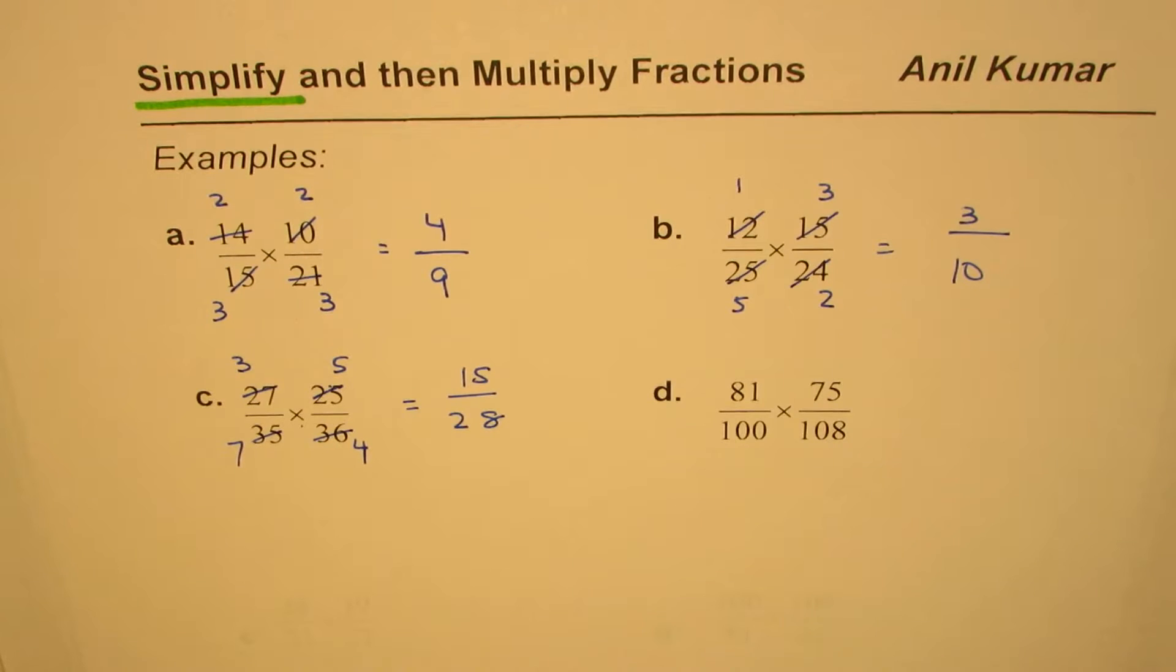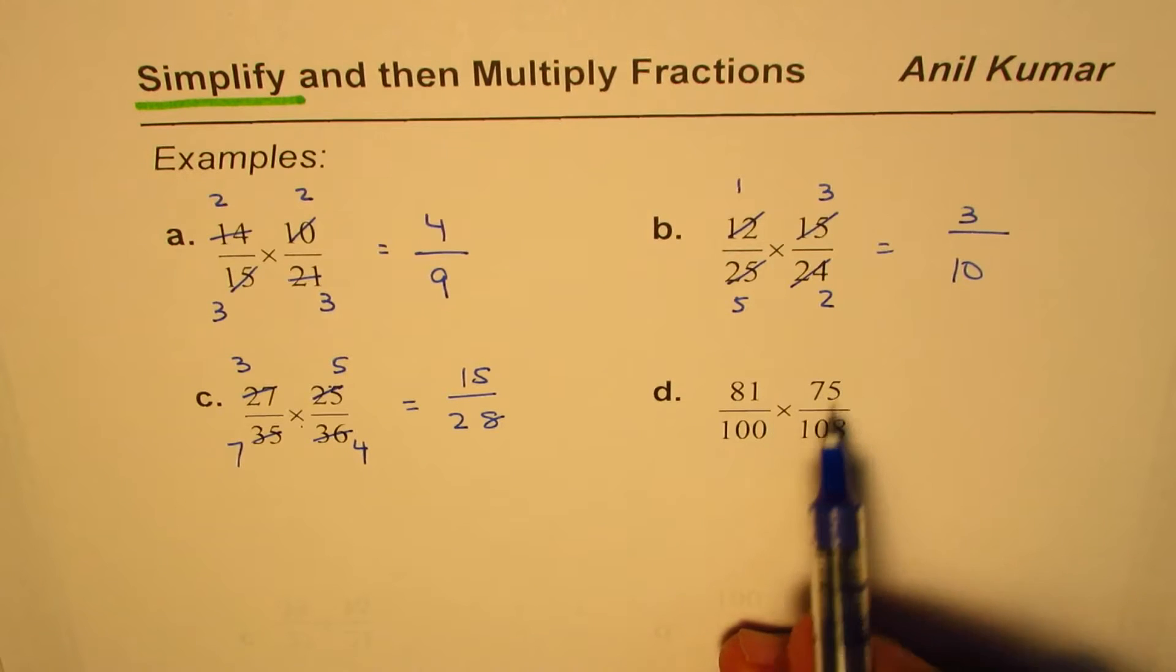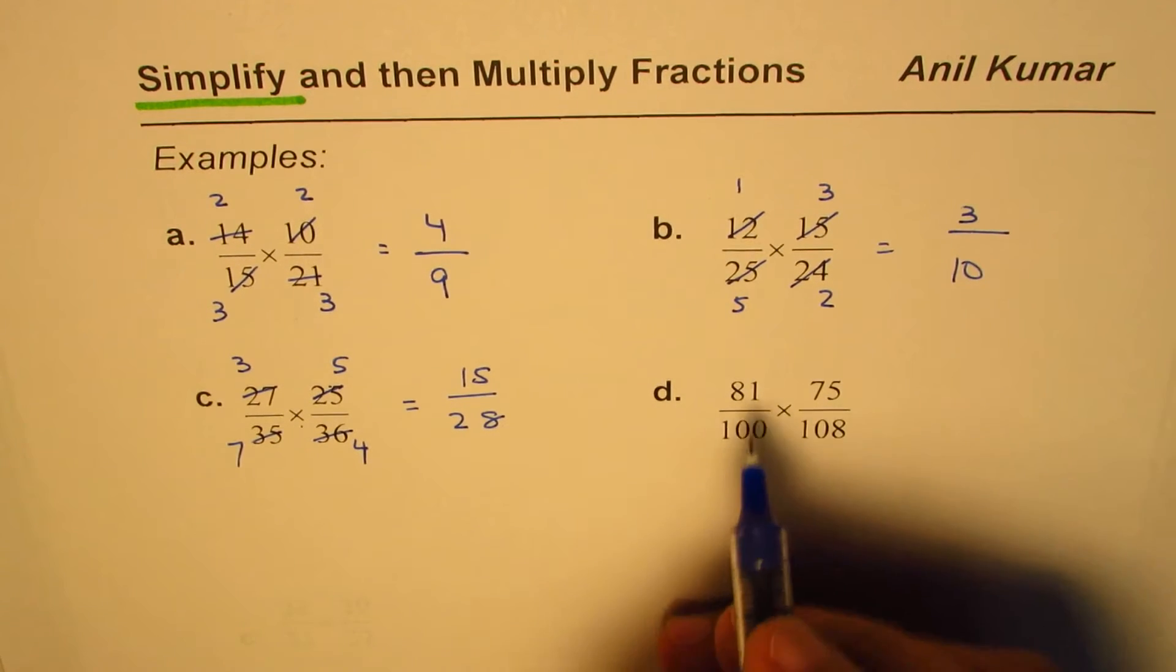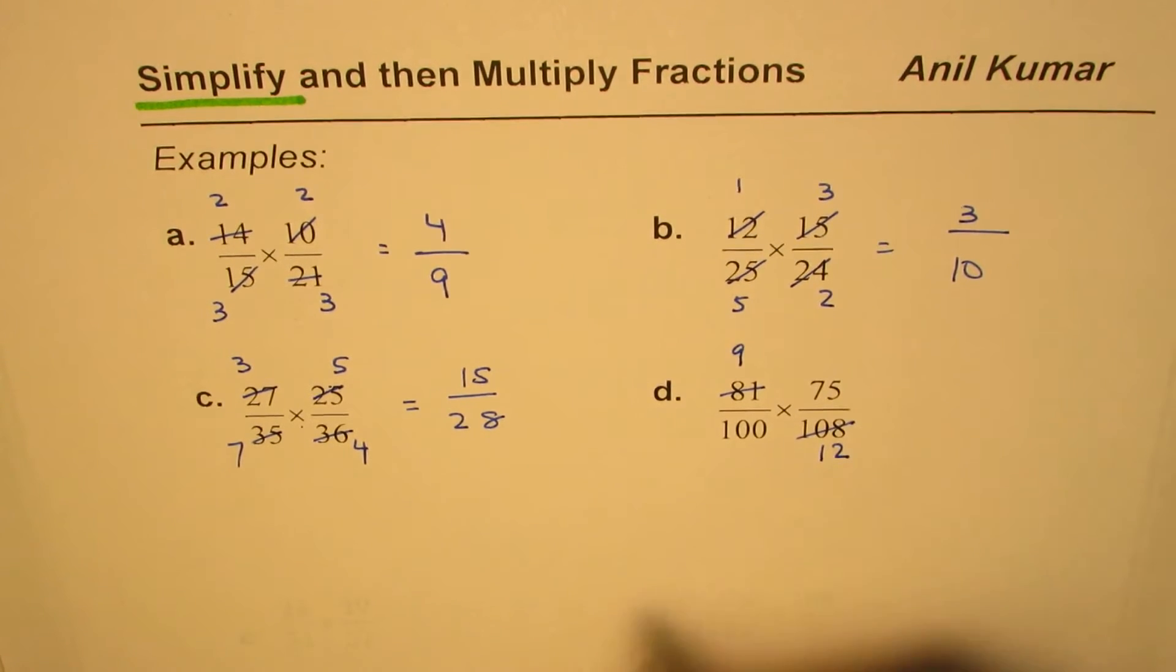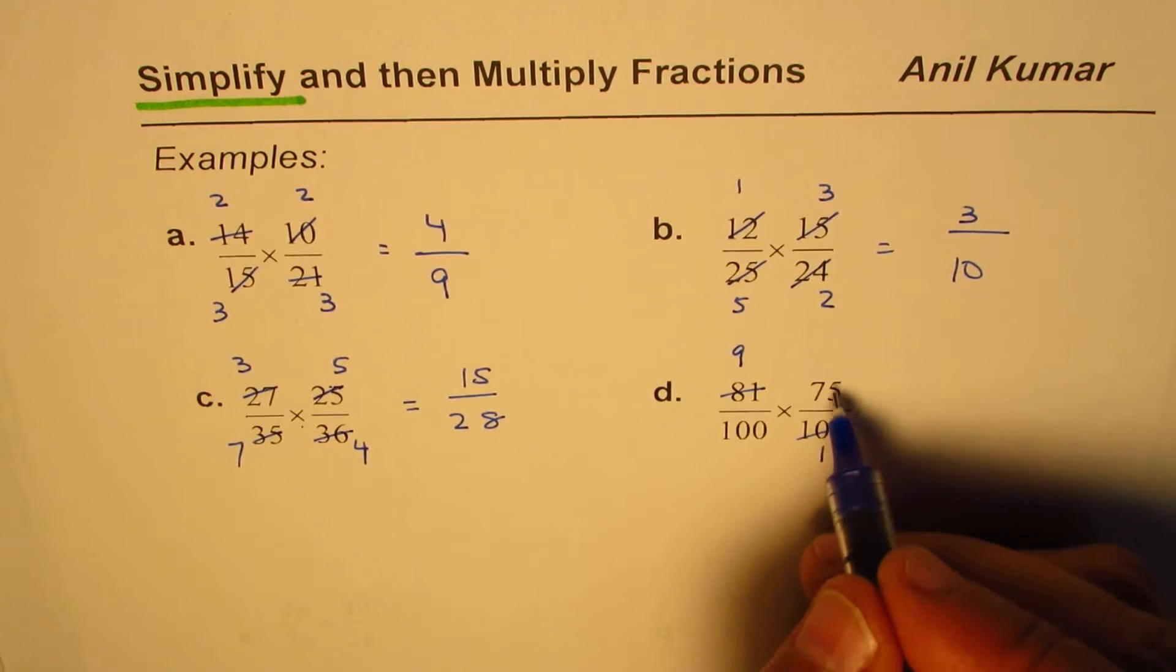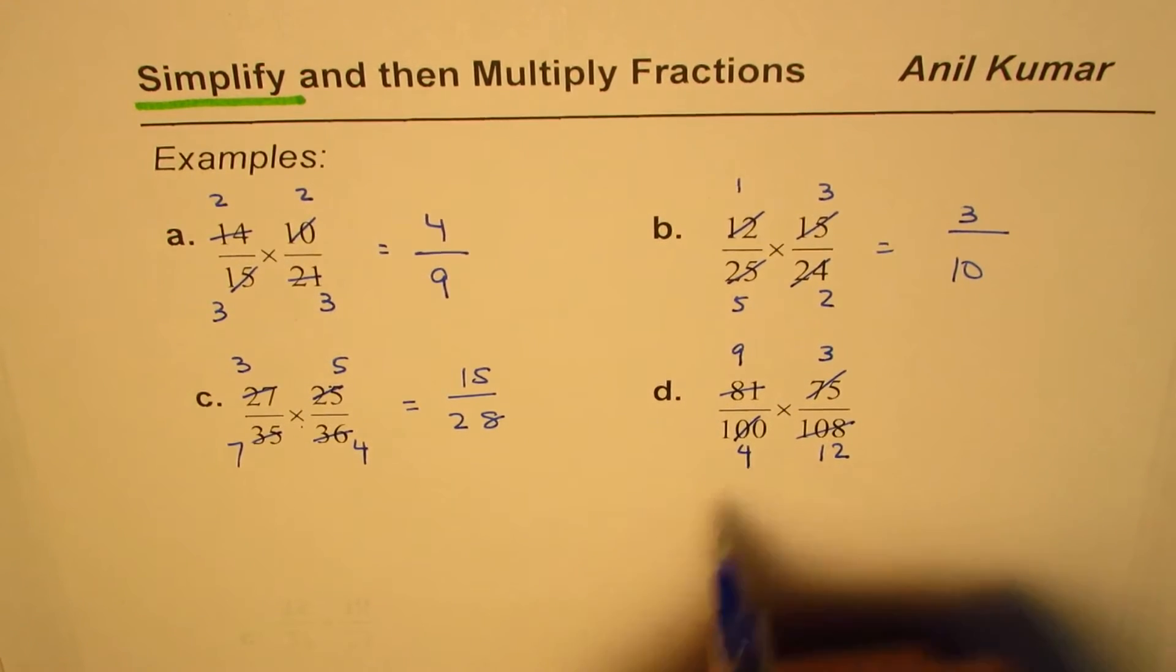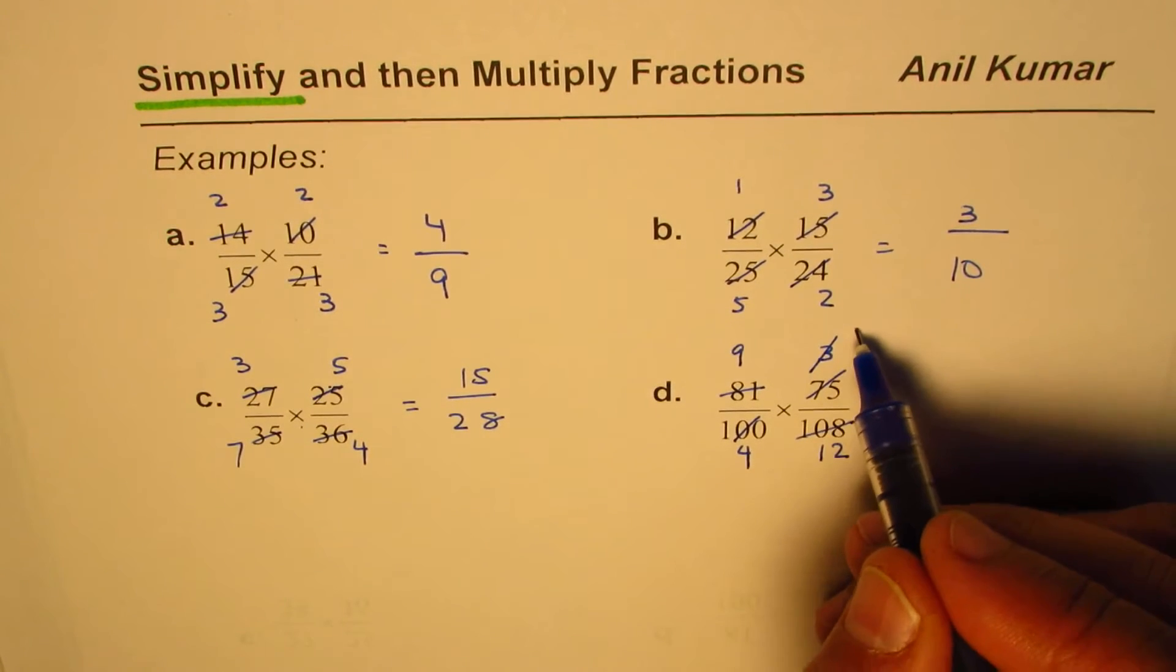Next one here is 81 over 100 times 75 over 108. We could divide them by 9: 9 times 9 and 9 times 12. These could be divided by 25: 25 times 3, 25 times 4. We do have a common factor here: 3 times 1 and 3 times 4.